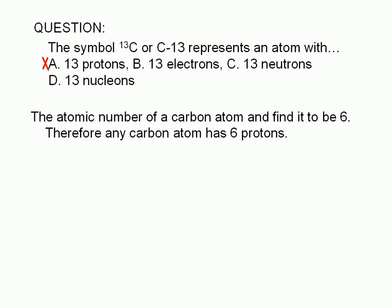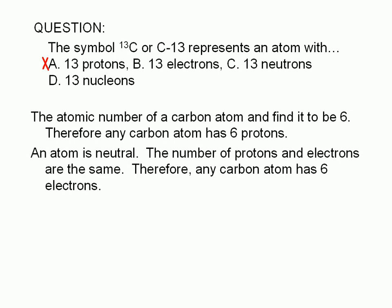Any atom is neutral, which means it has equal numbers of protons and electrons. Protons and electrons have equal but opposite charges. Therefore, any carbon atom also has 6 electrons, and choice B is wrong.